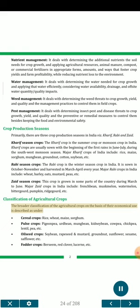Classification of agricultural crops: The broader classification of agricultural crops on the basis of their economical use includes: Cereal crops — rice, wheat, maize, sorghum. Pulse crops — pigeon pea, urd bean, moong bean, kidney bean, cow pea, chickpea, lentil, pea, etc. Oilseed crops — soybean, rapeseed and mustard, groundnut, sunflower, sesame, safflower, etc.